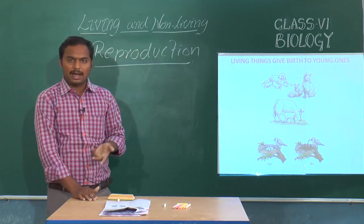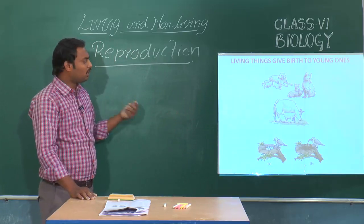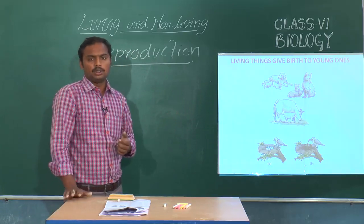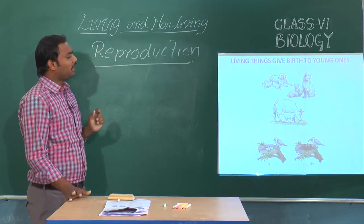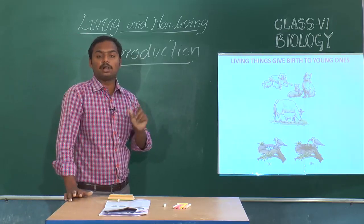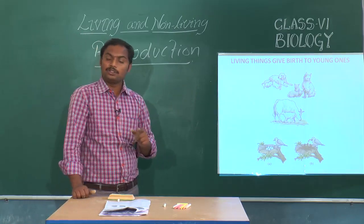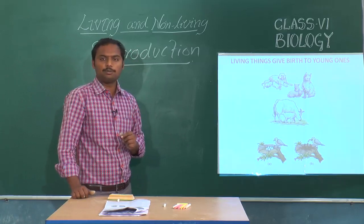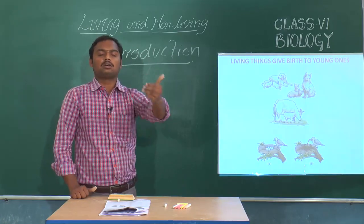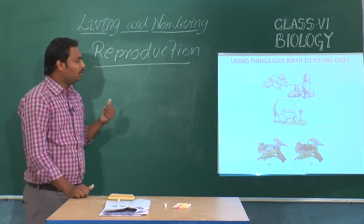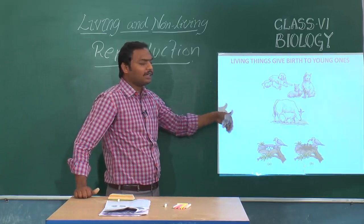All living forms — humans, plants, hens, dogs, cats, tigers — produce their young ones. This is one of the important characteristic features. To perform this activity, all living forms have specific organs. Plants also produce their young ones — when seeds are sown, new plants arise. Like this, living forms produce their young ones and continue their races.